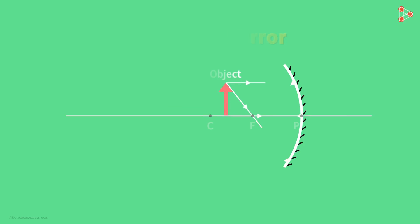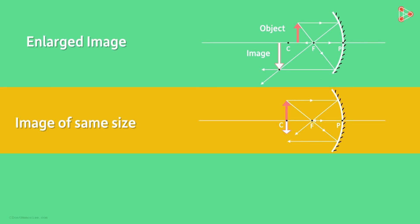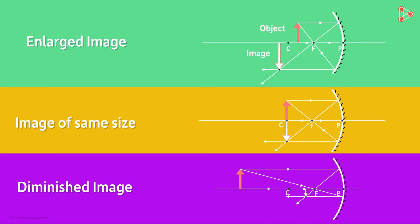Basically, the image can be enlarged, the image can be of the same size, or also can be diminished or smaller in size.